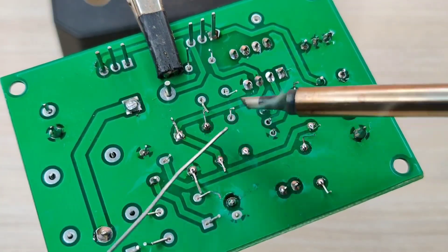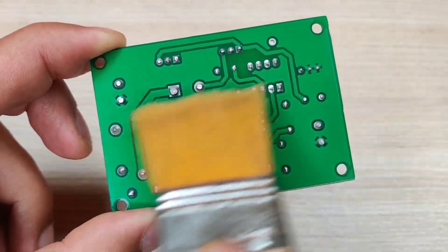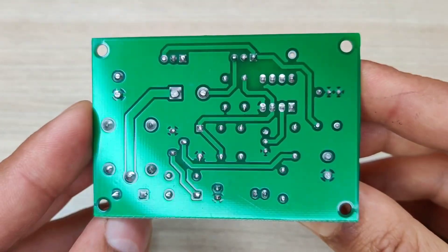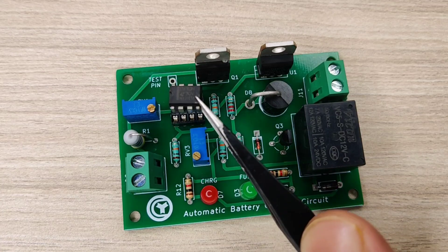And after spending some time with the soldering process, I cleaned the PCB with isopropyl alcohol and here our PCB is looking nice and clean. Now place the LM358 IC into the IC base.